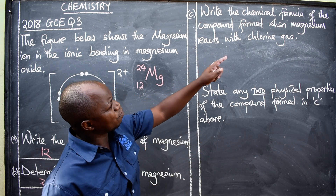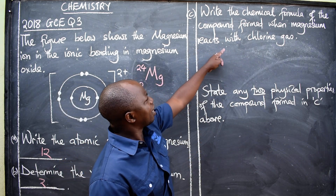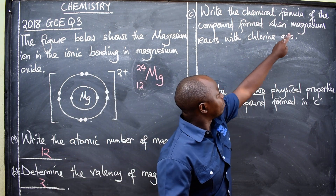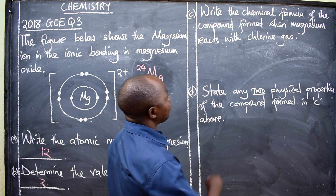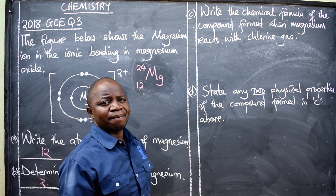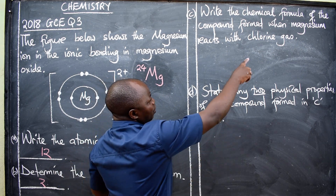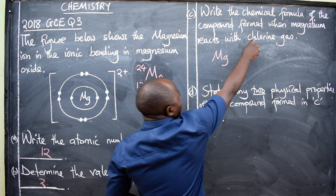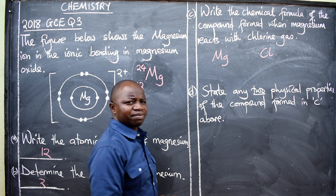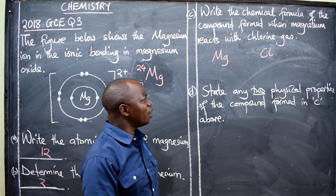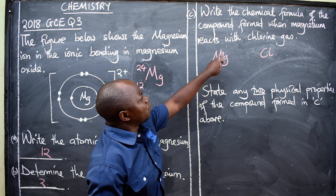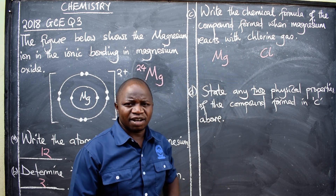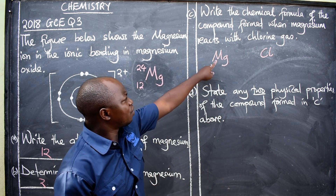For Part C, we need the chemical formula of the compound formed when magnesium reacts with chlorine gas. We have two elements: magnesium and chlorine. To write the chemical formula, you need to know their valences. For magnesium, we have already said its valence is 2. For chlorine, when you go to the periodic table you'll find that it is in Group 7.